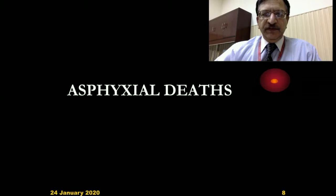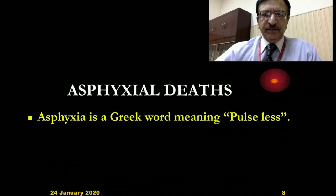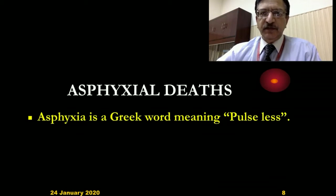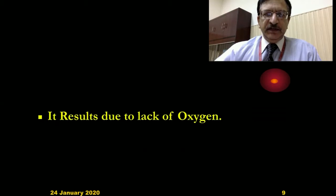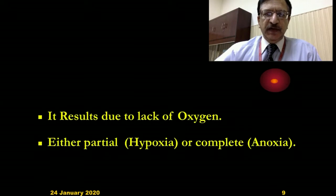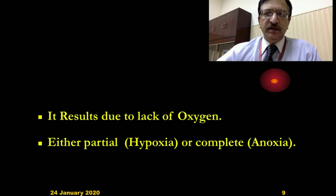The term asphyxia has been derived from a Greek word meaning pulseless. 'A' means absence — negative — and 'sphyxia' means the pulse. So asphyxia results due to lack of oxygen, and this lack of oxygen may be either partial, that is hypoxia, or complete, that is anoxia.